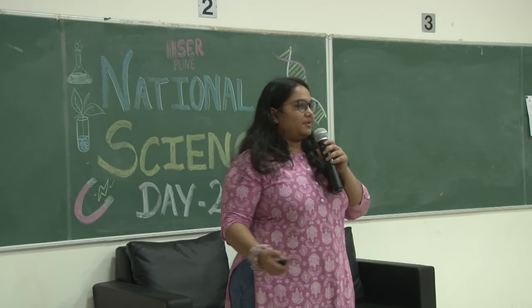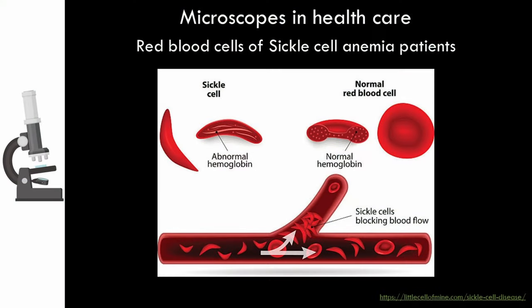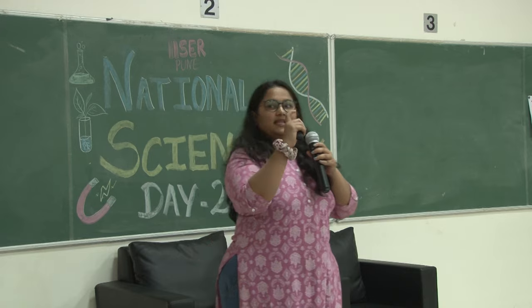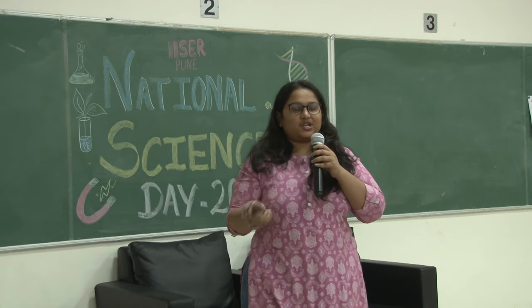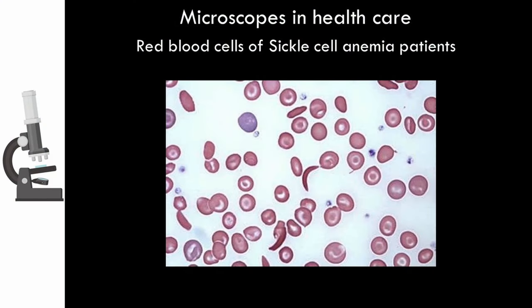Another diagnostic use is sickle cell anemia — a disease where your blood cells actually become sickle-shaped from round shape. This can actually be seen under the microscope: sickle-shaped cells versus normal round cells.